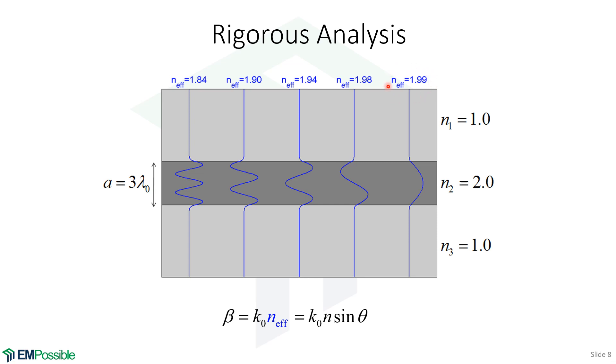Notice this fundamental mode has the highest effective refractive index, meaning it travels most slowly. The higher order modes travel more quickly. We can think of effective refractive index by looking at energy distribution within the mode. The more energy in the high index region, the higher the effective refractive index—it's a weighted average.